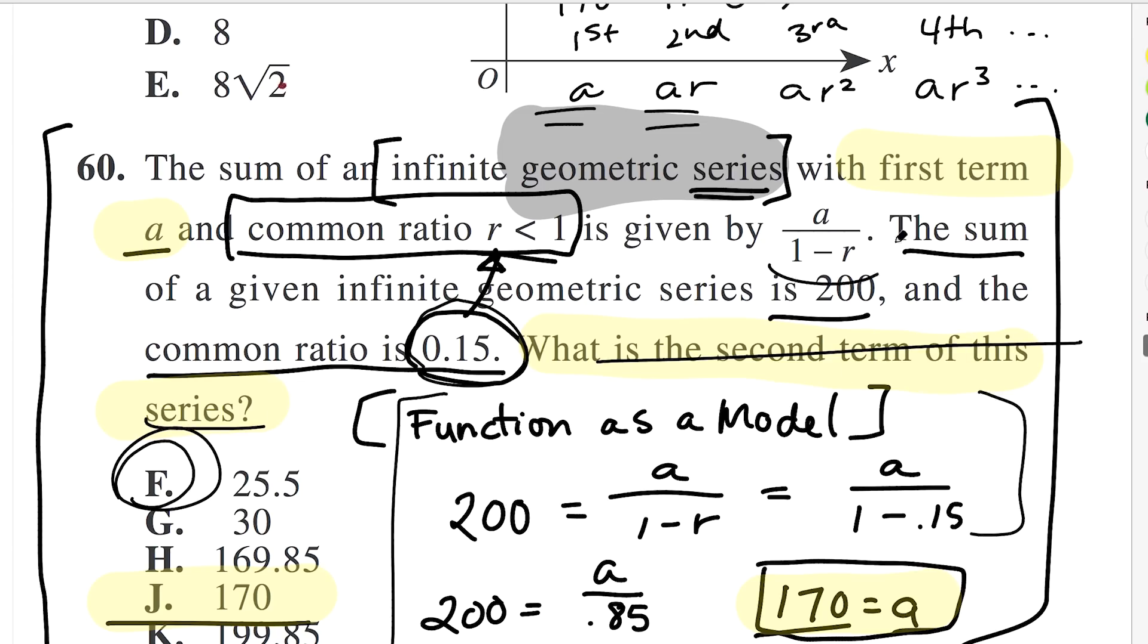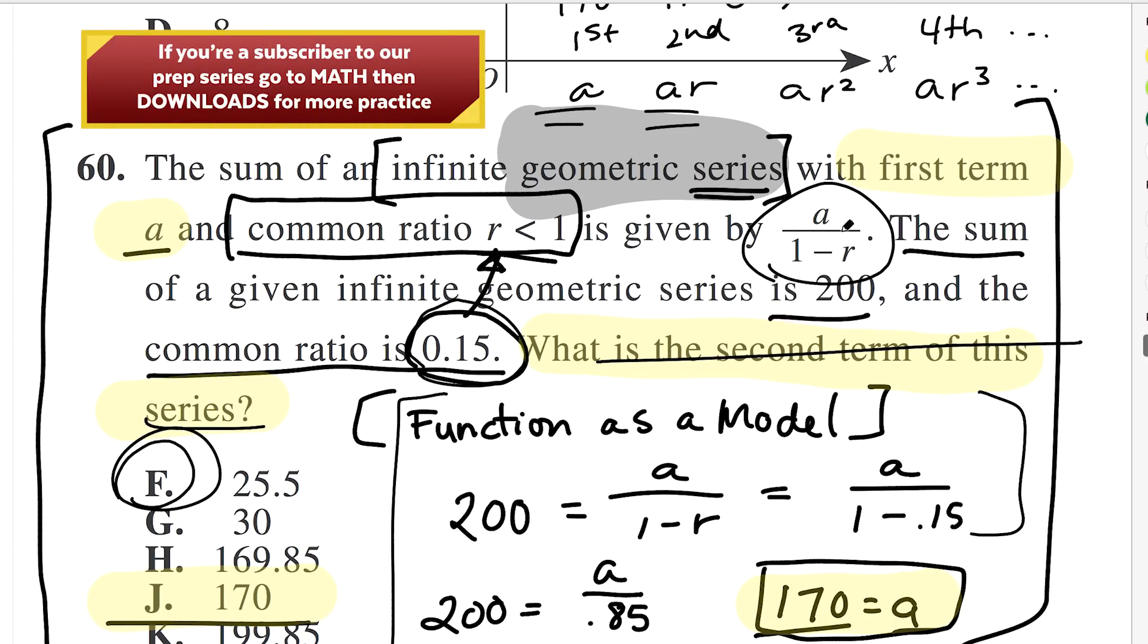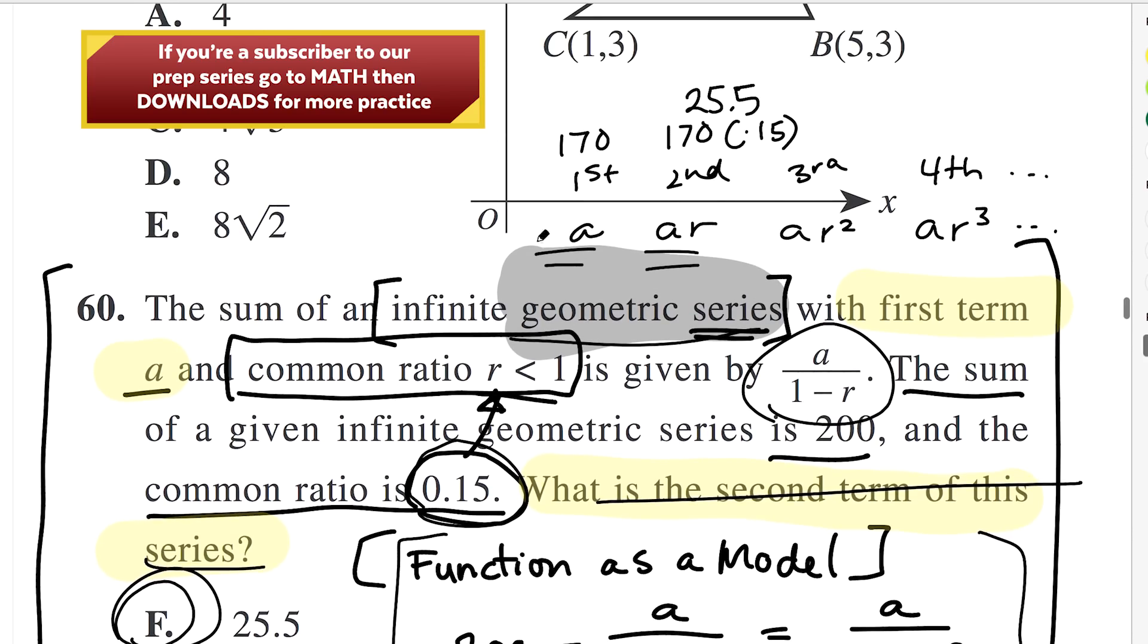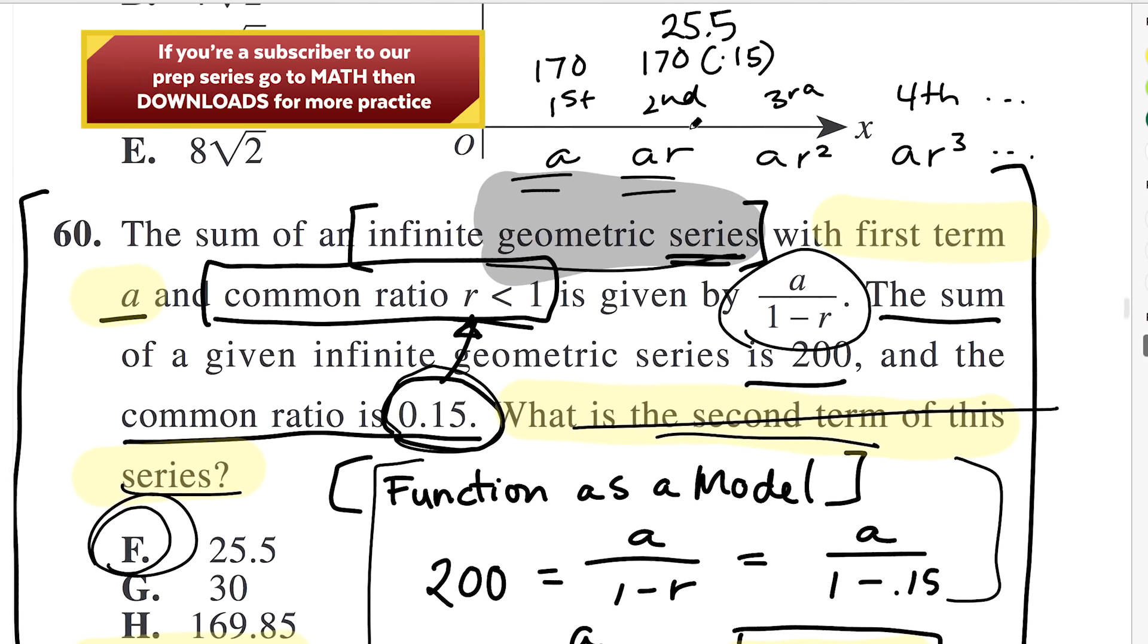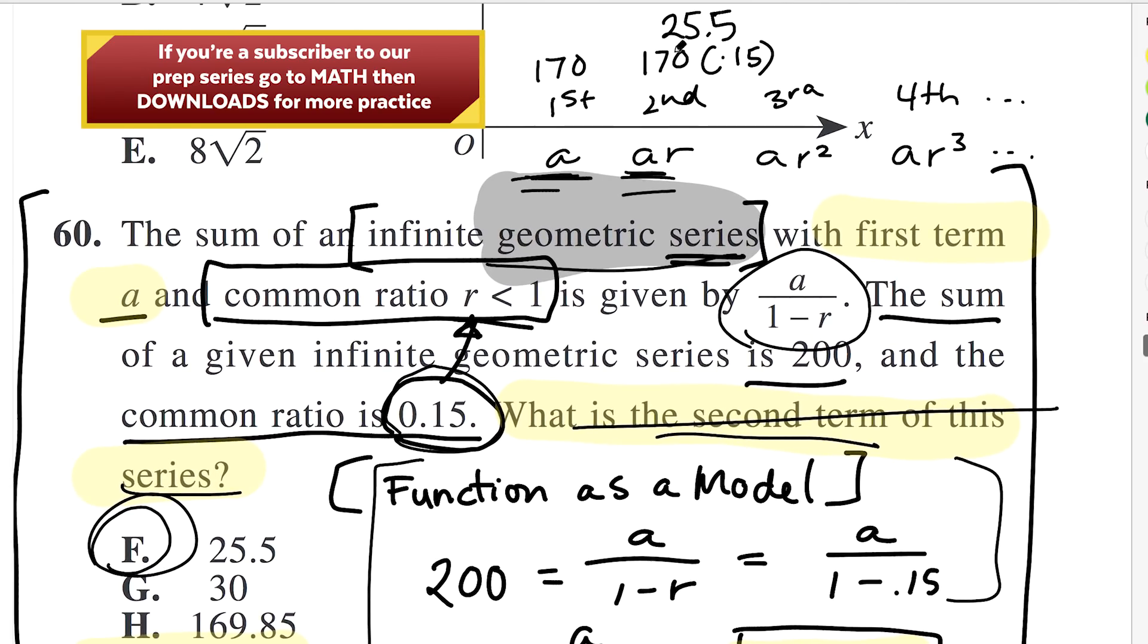So two things you have to know here. First, you have to do this function as a model stuff, which just means you have to read this equation, understand what it means, and then plug in all the stuff. But the second thing you have to know is what the heck is a geometric series and how do I then calculate the second term if I know the first term? And the second term is just the first term times that common ratio. There's another kind of series you need to know about as well. That's the arithmetic sequence.